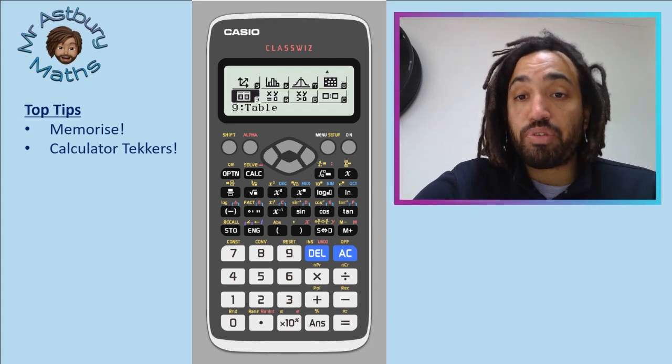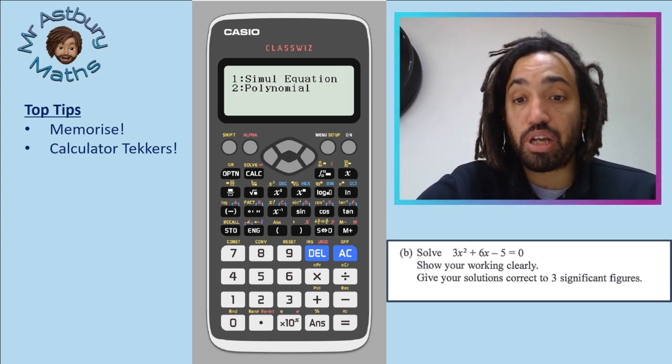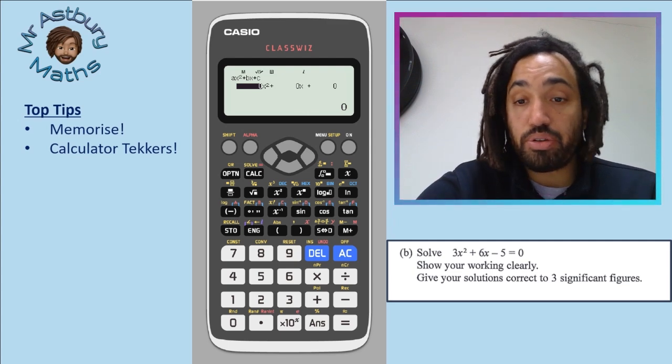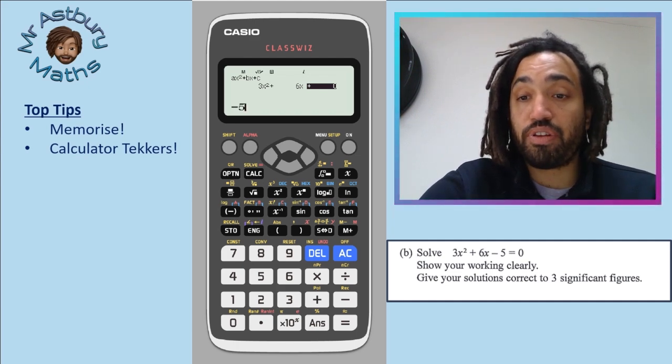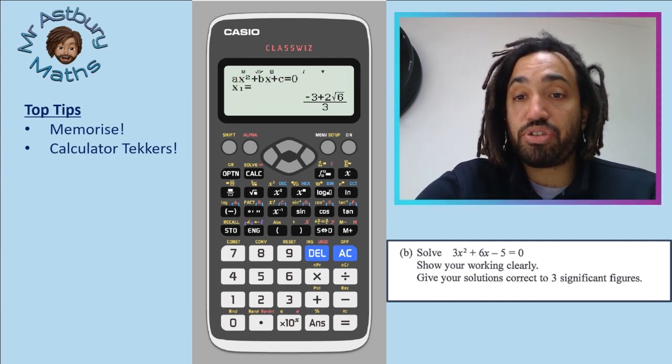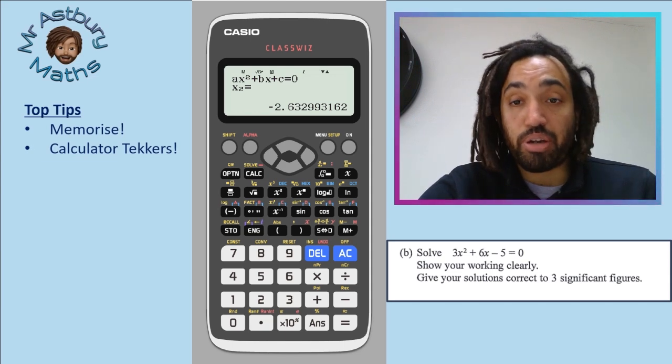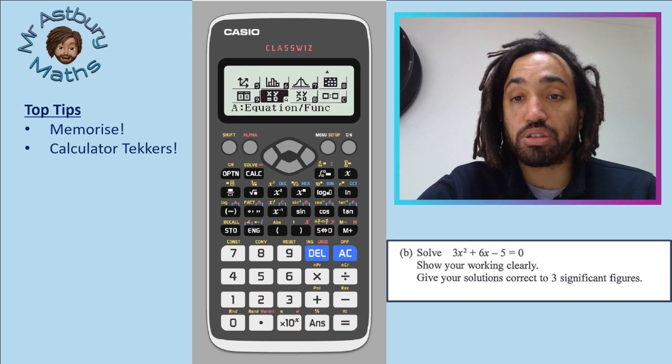Also solving quadratics, let's say you get this question here. You can just go to equation, polynomial degree two, you could type in three x squared six x minus five equals and it gives you your answers, which you can convert to decimals if you need to. Of course, you will need to show algebra working as it says here. But this is a great way of checking to make sure you've got your answer right.